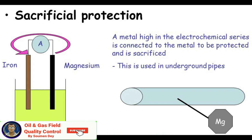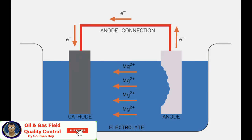How does a sacrificial anode prevent corrosion? Sacrificial anodes work by oxidizing more quickly than the metal they protect, being consumed completely before the other metal reacts with the electrolyte. What is the key difference between cathodic protection and sacrificial protection? Cathodic protection is the process of protecting a metal surface by making it the cathode in the electrochemical cell, whereas sacrificial protection involves protecting the desired metal surface using a sacrificial anode.